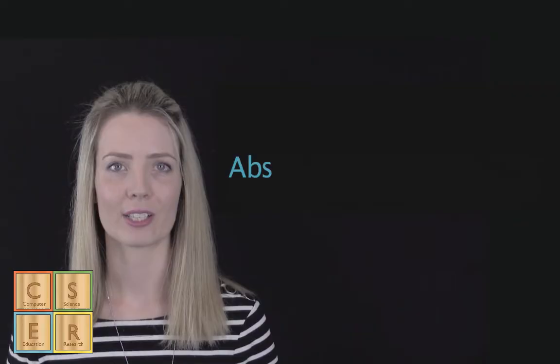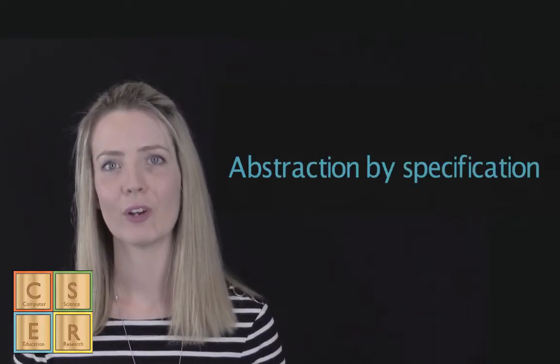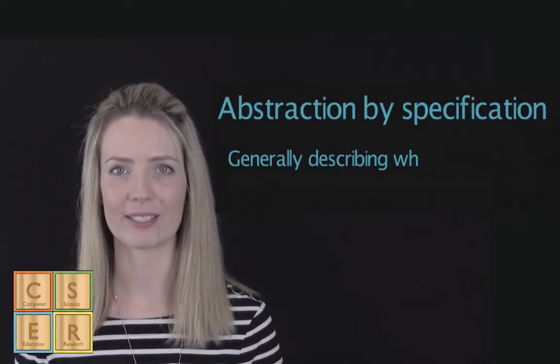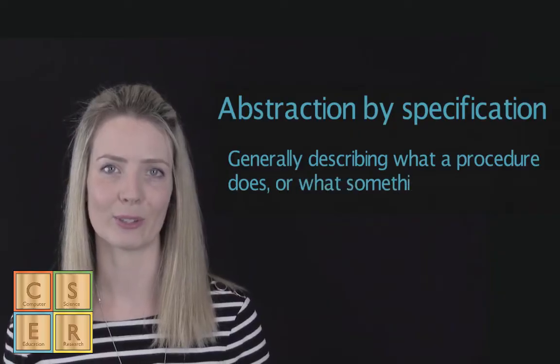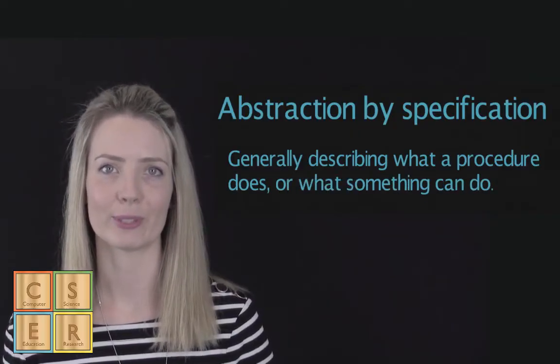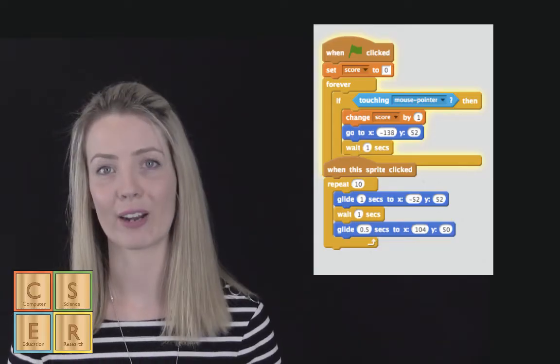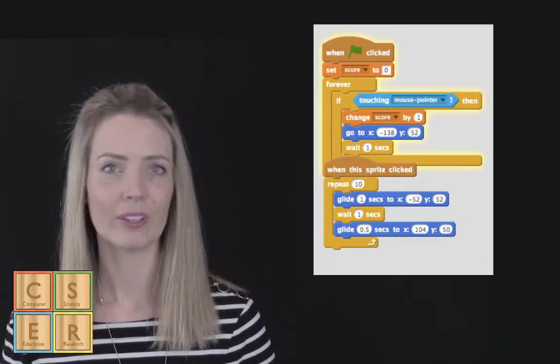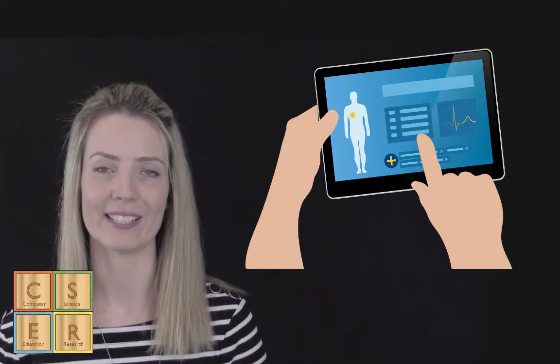Our last example, abstraction by specification, involves abstractly describing what a procedure does, or what something can do, without describing every little detail. For example, you might say this code keeps track of the score, or this app allows you to track your fitness.